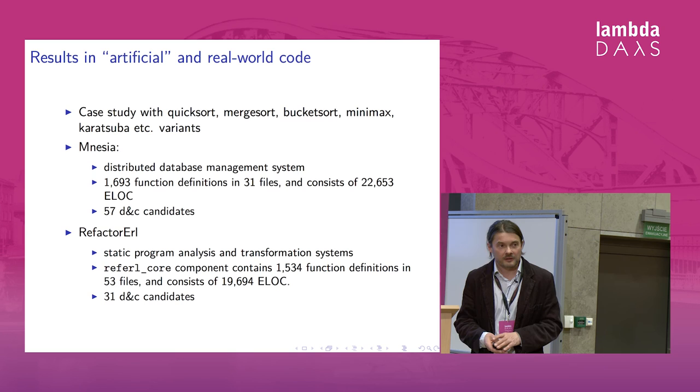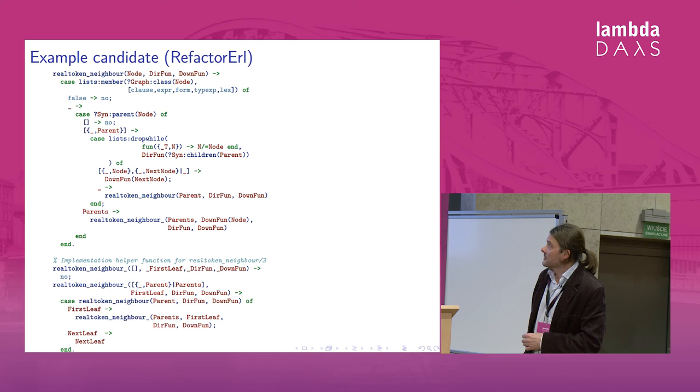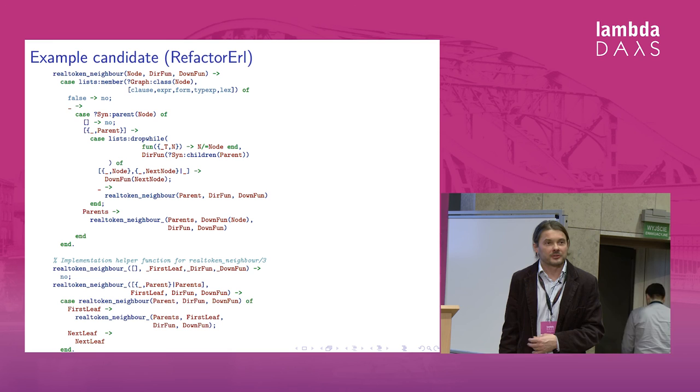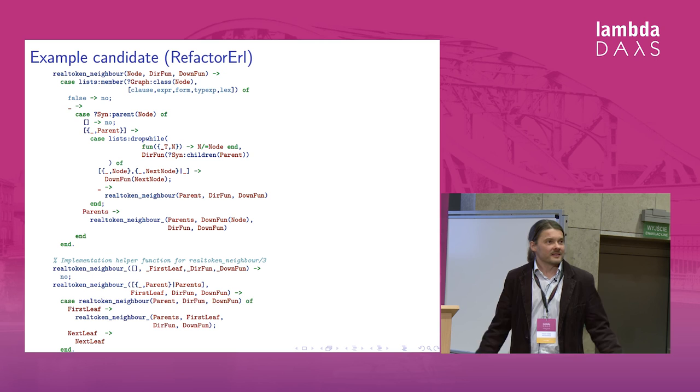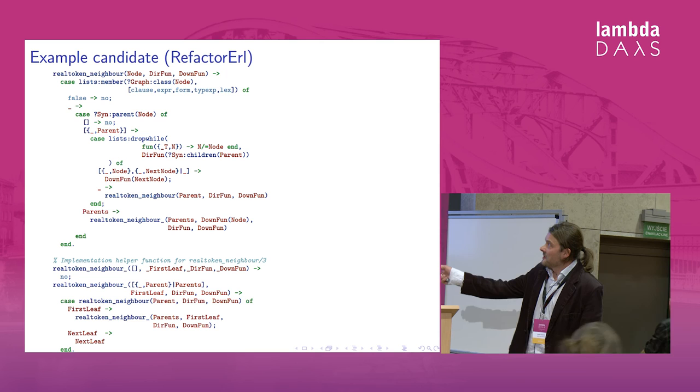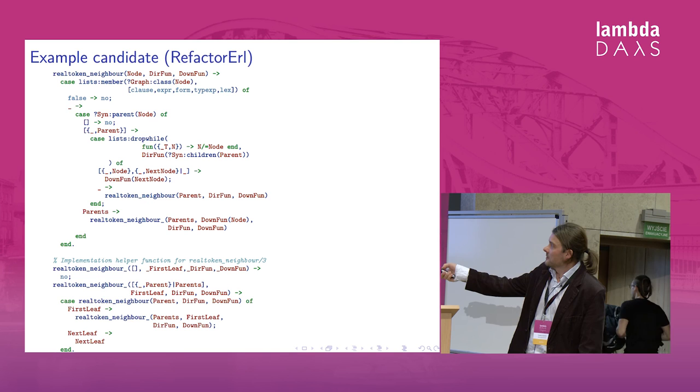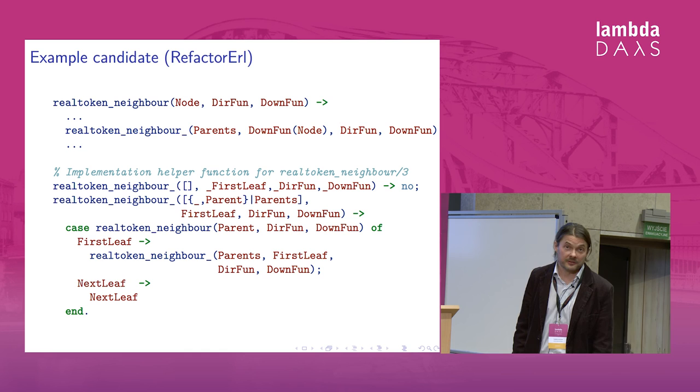So this is one candidate we have found just to frighten you. It took me about half an hour to understand why our tool has identified this particular candidate. So it's not visible at the first glance. If you go closer, you will see that there is this function which calls another function, which calls the first one, and calls itself recursively. So this is what the tool has identified. So it's really not trivial occurrence of the divide and conquer pattern.